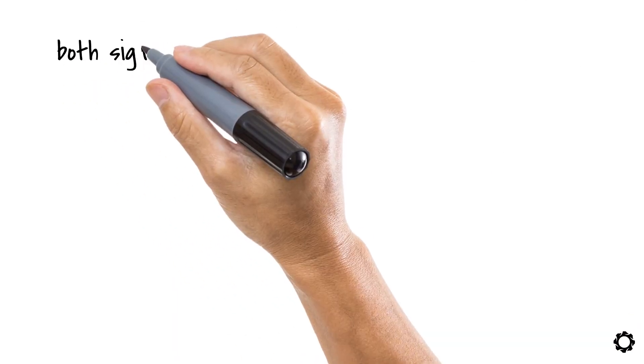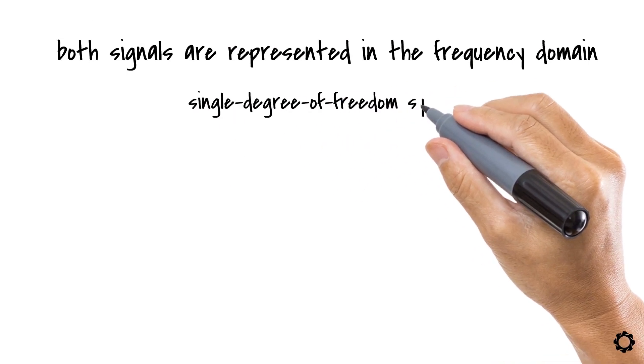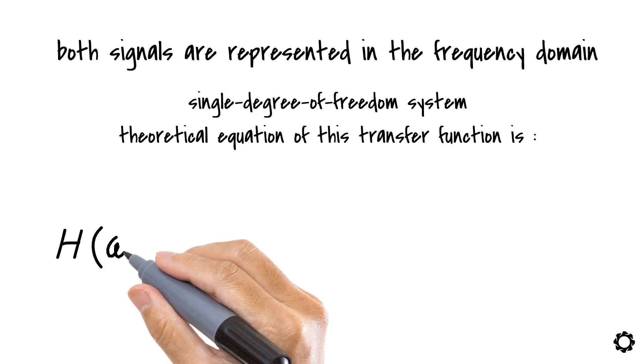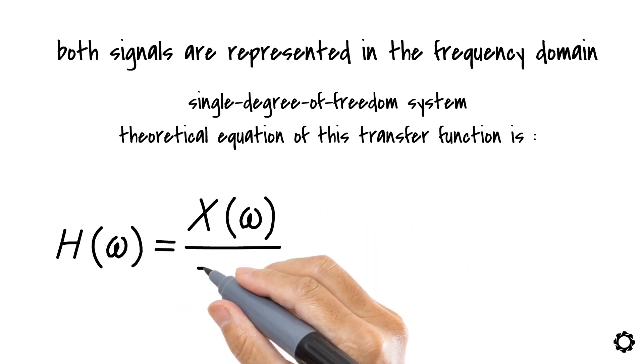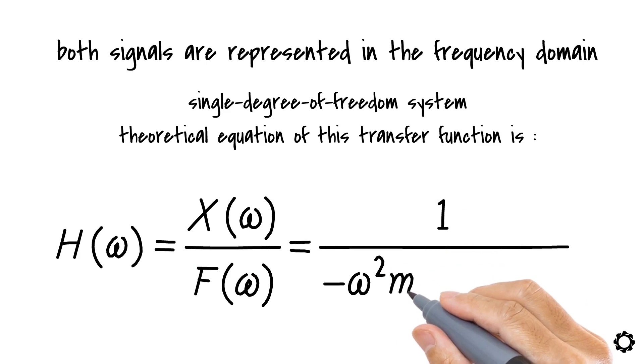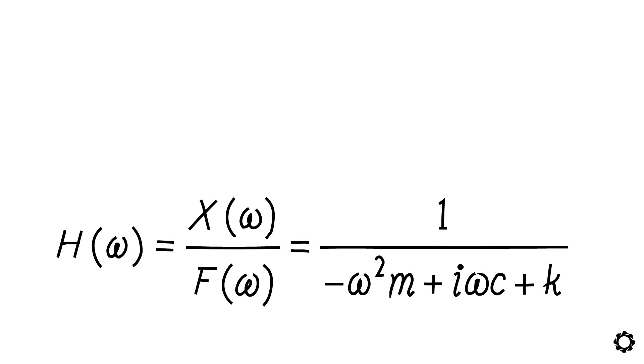In our case both signals are represented in the frequency domain and for the single degree of freedom system the theoretical equation for this transfer function is H(ω) = X(ω)/F(ω) = 1/(-ω²m + iωc + k). Now sorry for bringing back the equations but I promise that this is the only one we need here.